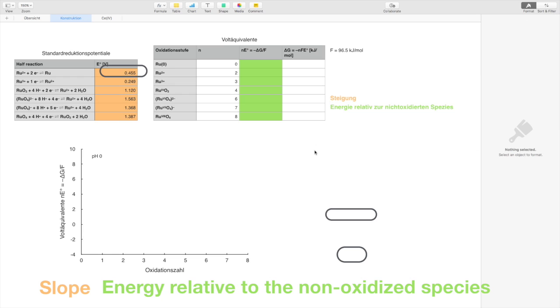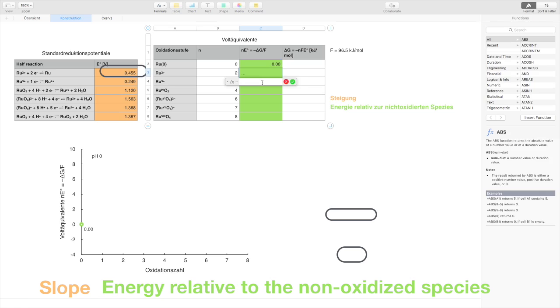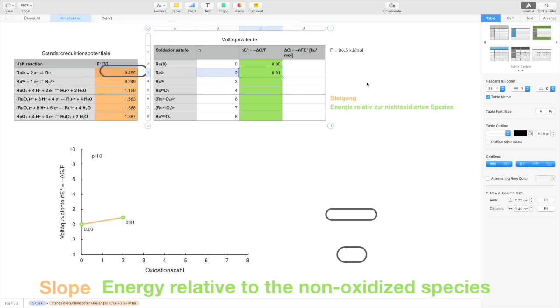The slope between two species corresponds to their reduction potential. You will get the energy level of ruthenium 2 when you multiply the number of electrons with the reduction potential of this reaction. The energy level of ruthenium 2 is 0.91 volts. You can see that ruthenium 2 is thermodynamically less stable than ruthenium zero.